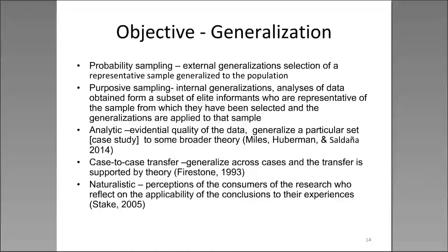The objective here is generalization. There are different types. Probability sampling tends to yield external generalization — you select a representative sample and generalize to a population. Purposive sampling can yield internal generalization — you may take a subset of your group considered to be elite informants who are representative of the sample, then generalize from what they say to the sample as a whole.